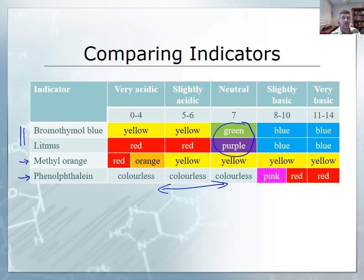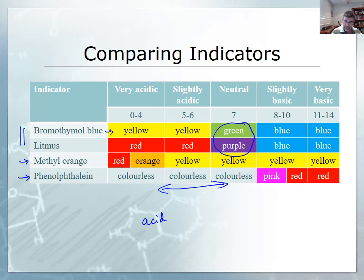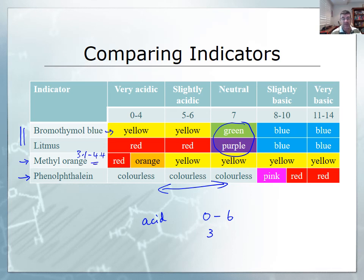Sometimes it's important to get a sense of exactly how strong or concentrated a particular solution is by using a combination of different indicators. For example, if we knew our solution was acidic but didn't know whether it was strong or weak, we might use bromothymol blue — which would turn yellow, placing it somewhere between pH 0 and 6. Then if methyl orange also turned red, we'd know it must be less than pH 3, since methyl orange's color change region is between about 3.1 and 4.4. This allows us to narrow down and pinpoint the pH more precisely.